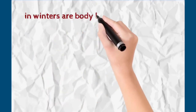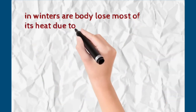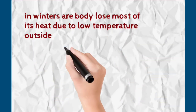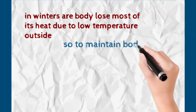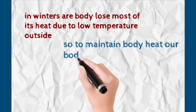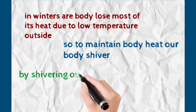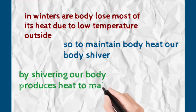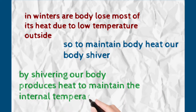Winters में जब बाहर का temperature बहुत कम हो जाता है, तो हमारी body most of the heat lose कर देती है, जिसके कारण उसका temperature भी कम हो जाता है. But हमारी body दुबारा से temperature maintain करने के लिए shiver करती है, and यह shivering — यह कापना — heat produce करता है, जिसके कारण हमारा अंदर का body temperature बढ़ जाता है और दुबारा maintain हो जाता है — internal environment regulate हो जाता है.